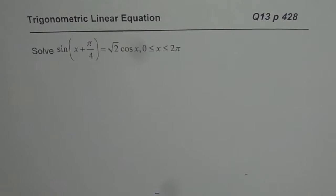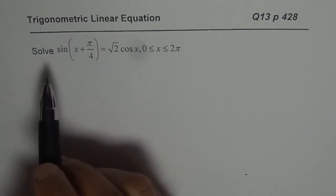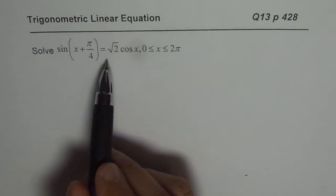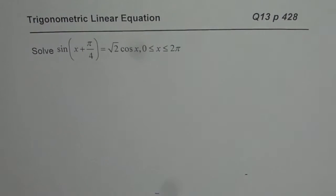Hi, I am Anil Kumar and here is question number 13 page 428 from Nelson Advanced Functions. The question is: solve sin(x + π/4) = √2 cos x where x is between 0 and 2π.